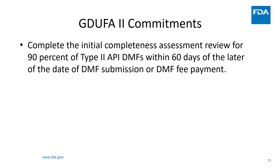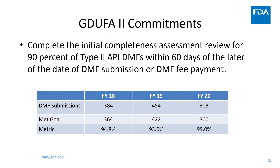We have now come to the second topic of my presentation: how we have been delivering the GDUFA-2 commitments. As you know, the completeness assessment metric is annually reported to Congress. According to the GDUFA-2 commitment letter, we need to perform the initial completeness assessment of 90% of type 2 DMFs within 60 days of the later date of DMF submission or DMF fee payment. As you can see from FY18, 19, and 20 data, we have fulfilled our commitment to the industry. 99% for FY20 is the highest we have achieved so far.